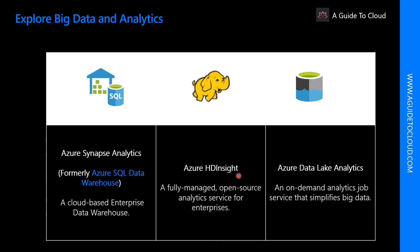HDInsight allows you to run popular open source frameworks and create cluster types such as Apache Spark, Apache Hadoop, Apache Kafka, Apache HBase, Apache Storm, and machine learning services. HDInsight also supports a broad range of scenarios such as extraction, transformation, loading, data warehousing, machine learning, and IoT.